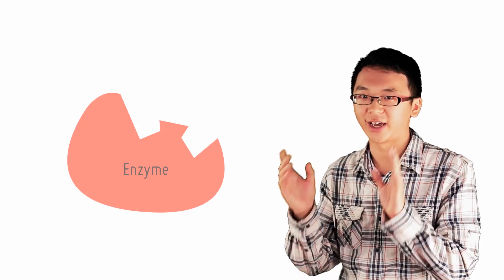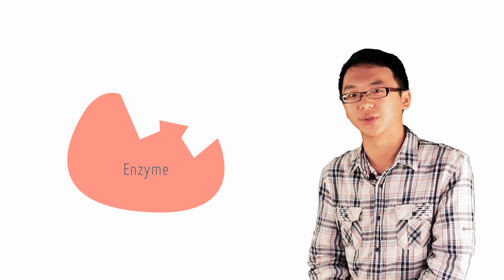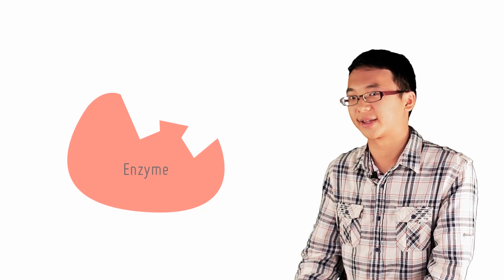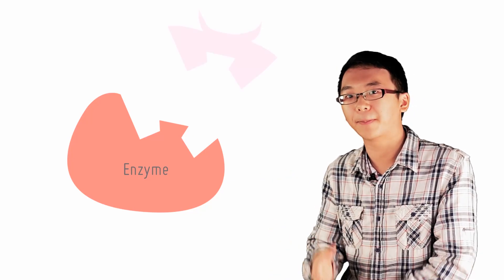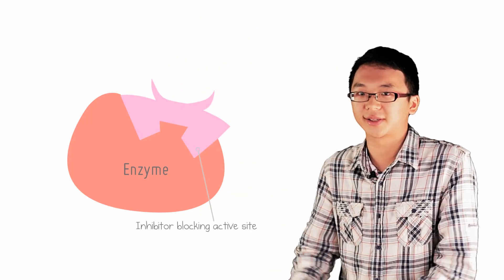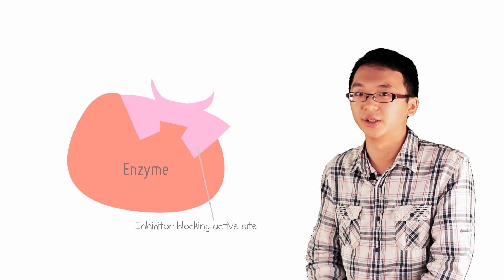Now, where the inhibitor binds to the enzyme is also an important factor to discuss. By now you should know what an active site is. If an inhibitor binds at the active site, it blocks the site for binding of the substrate to be converted into the product.